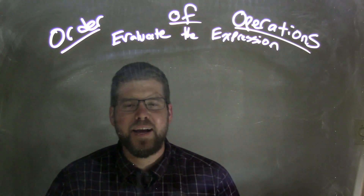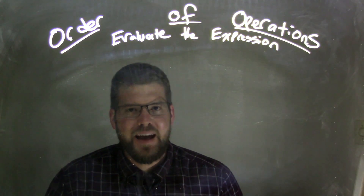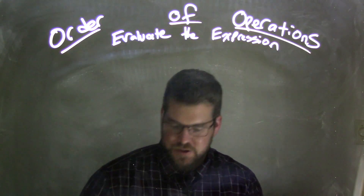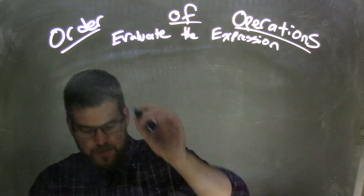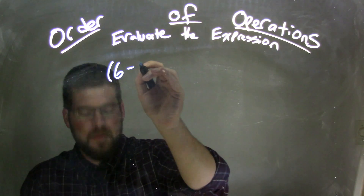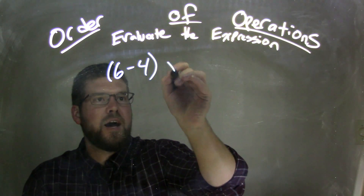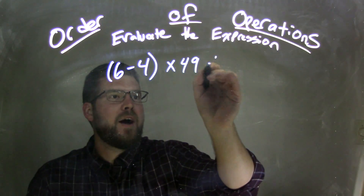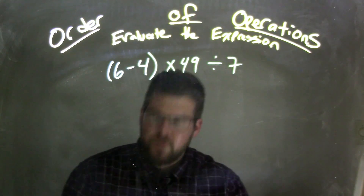Hi, I'm Sean Gannon, and this is MinuteMath, and today we're going to learn about the order of operations. So if I was given this expression: 6 minus 4 times 49 divided by 7, this one is tricky.